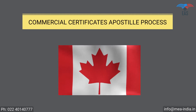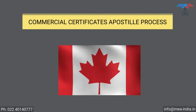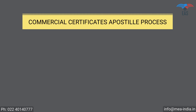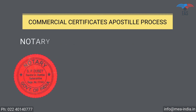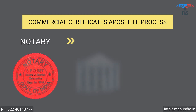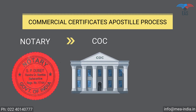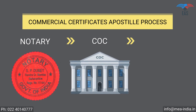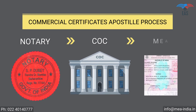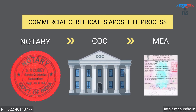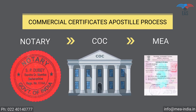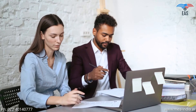Commercial Documents Apostille Procedure for Canada. Step 1: Notary Attestation. Step 2: Attestation from the Chamber of Commerce. Step 3: Final Attestation from the Ministry of External Affairs. Since this process involves your original documents, there is always a concern of document security and handling.